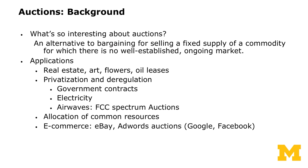For instance, if you want to buy a house, most likely you have to go through a sealed bid auction. The same applies to art, flowers, and oil leases. In the way of privatization and deregulation, lots of governments use auctions to auction off airwaves. For instance, the FCC spectrum auction is a high-stake example of this. The allocation of common resources is often done through auctions. For e-commerce, when you search on Google, you're often shown sponsored ads, and these slots are auctioned off through AdWords auctions, which accounts for more than 90% of Google's revenue. So it is an important institution in our current economic environment.